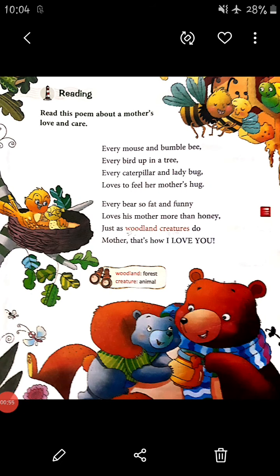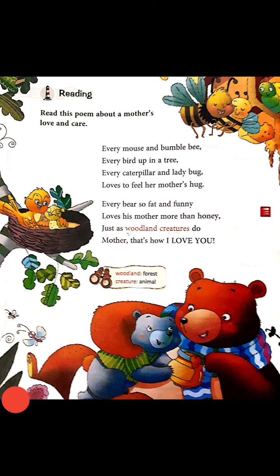In this poem, the poet explains how every creature — such as the bumblebee, a bird, a caterpillar, and a ladybug — loves to feel its mother's hug, meaning how they feel in their mother's hug. The poet is also saying: I love my mother just like the woodland creatures do. Every animal and every baby animal shows their love towards their mother.